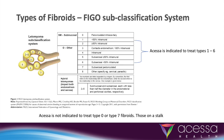Fibroids are typically classified type 0 through 8 using the FIGO, or International Federation of Gynecology and Obstetrics, classification system, depending on location within the uterus.